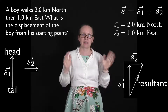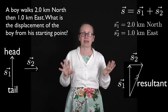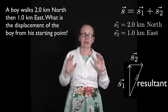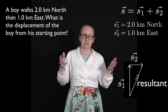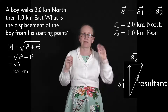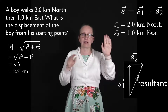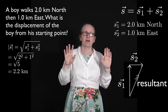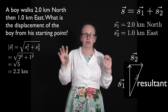Now all we need to do is get into the nitty-gritty of how to solve it. In this case it's not too bad because we have a right-angled triangle, so we can use Pythagoras and trigonometry to work out the magnitude and direction of our resultant displacement. The magnitude, given by Pythagoras, is equal to the square root of the first vector's magnitude squared plus the second vector's magnitude squared — that's the square root of 2² + 1², which is the square root of 5, giving us 2.2 kilometres.